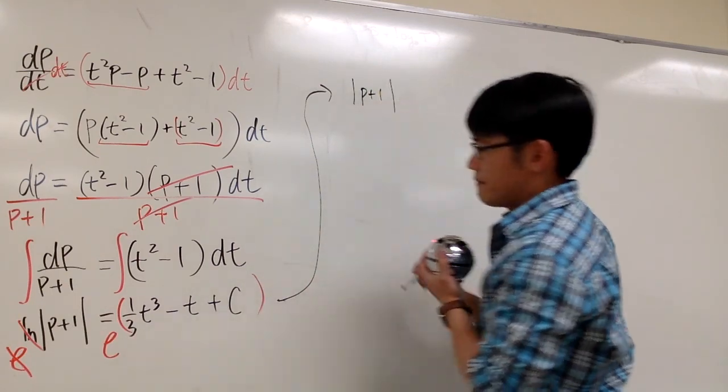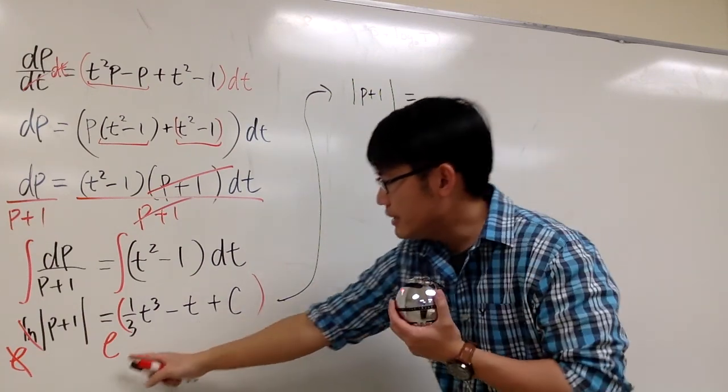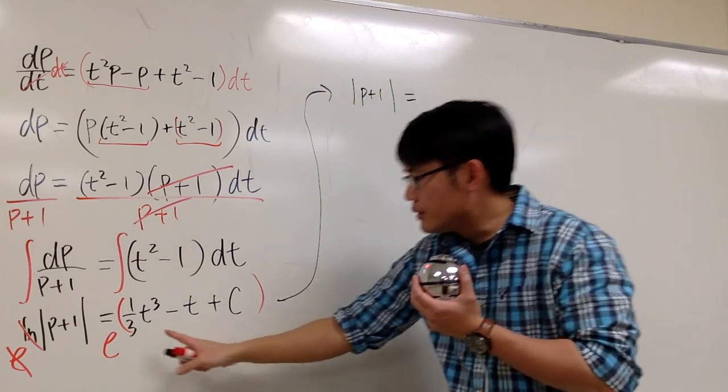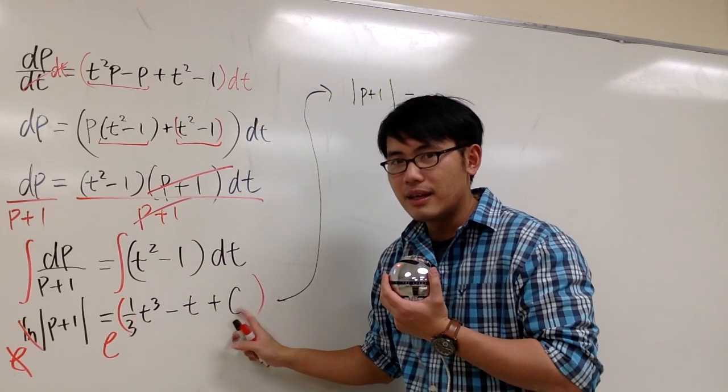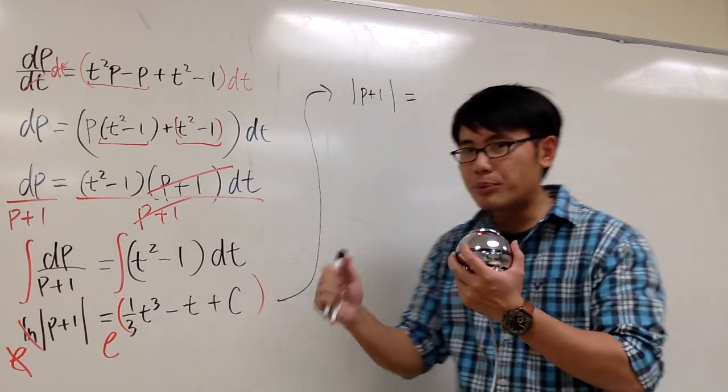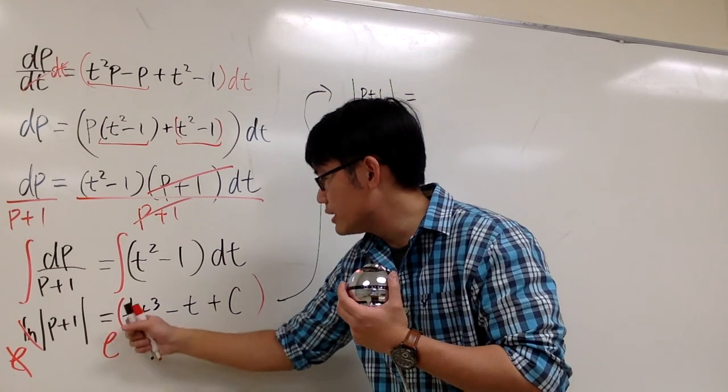And then on the right-hand side, I have the following. I have e to this power. And then, you see that these two are the function parts. The c is a constant. I'm going to do one thing. I'm going to separate the function part and then the constant part. I'm going to first write down e to this power.